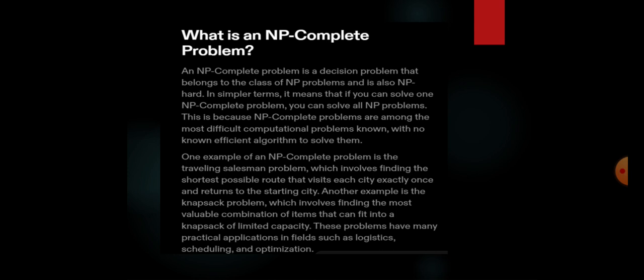What is an NP complete problem? An NP complete problem is a decision problem that belongs to the class of NP problems and is also NP-hard. In simple terms, if you can solve an NP complete problem, you can solve all NP problems. This is because the NP complete problems are among the most difficult computational problems known, with no efficient algorithm to solve them.